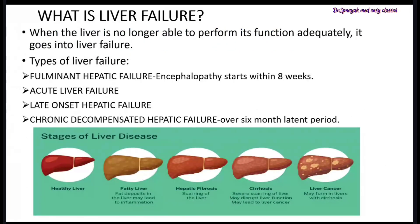When the liver is no longer able to perform its functions adequately, it goes into liver failure. Types of liver failure include: fulminant hepatic failure, in which encephalopathy starts within 8 weeks; acute liver failure, characterized by abrupt onset of severe liver injury; late onset hepatic failure; and chronic decompensated hepatic failure, which occurs over a 6-month latent period.